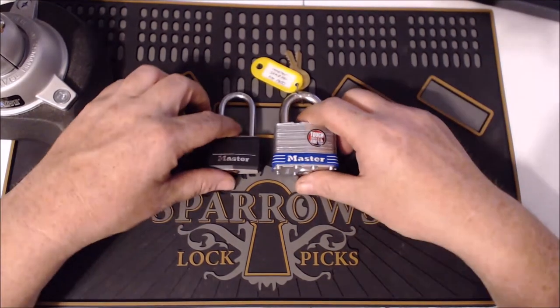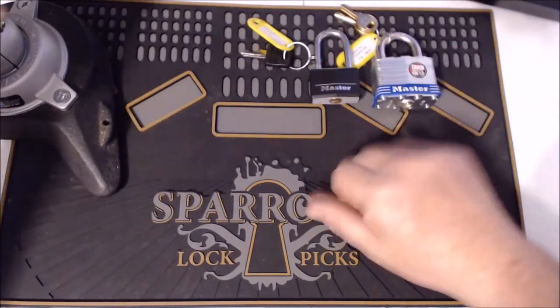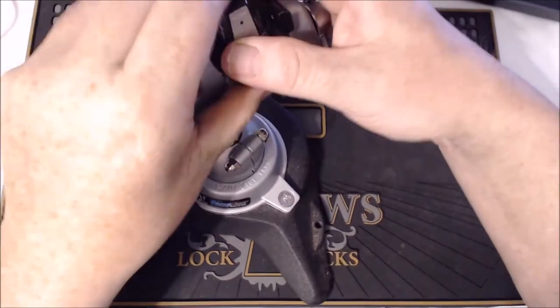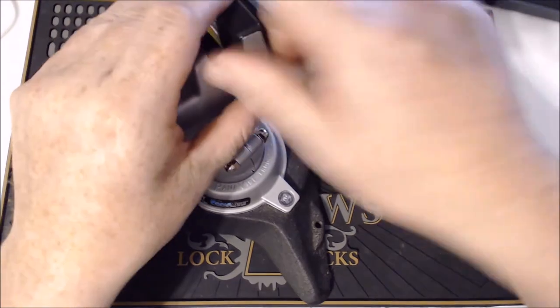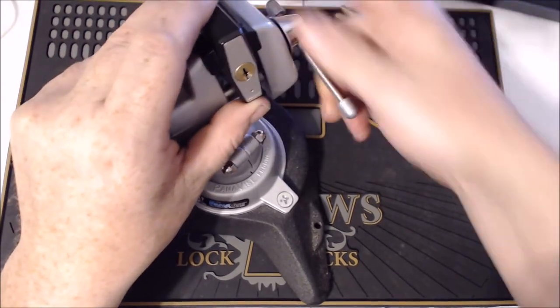So without further ado, let's get going. We're going to start with the 141. And I'm just going to end up using the same pick for both of these. Put it in right. This is in Australia, doesn't need to be upside down.